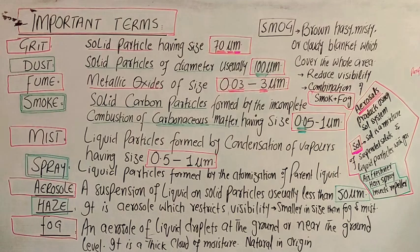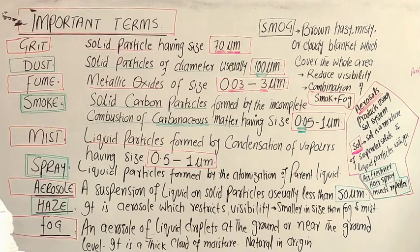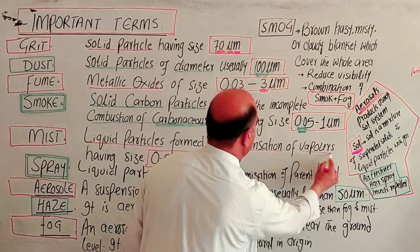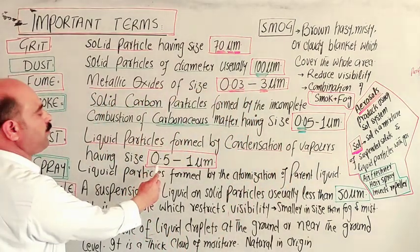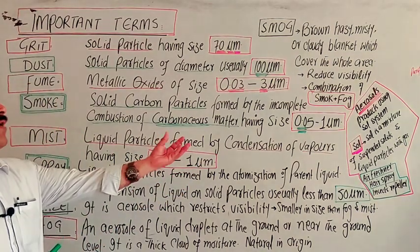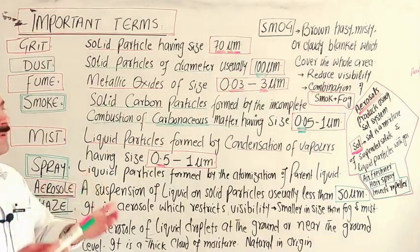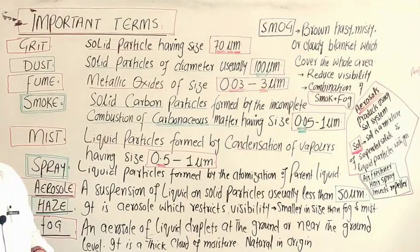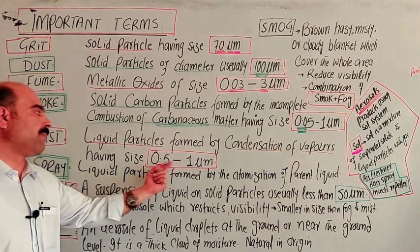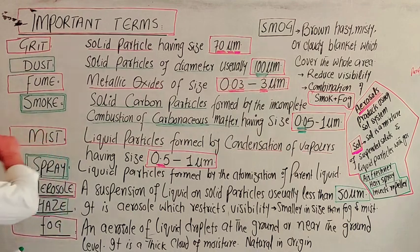Mist. What is mist? Category changes. Liquid particles, liquid droplets formed by the condensation of vapors, having size 0.5 to 1 micrometer. Now these liquid droplets are called mist.